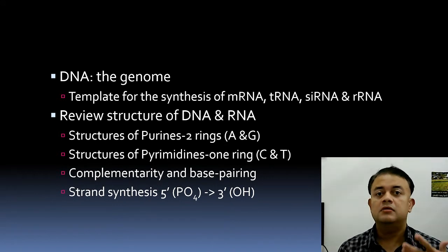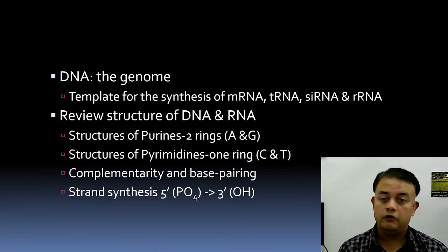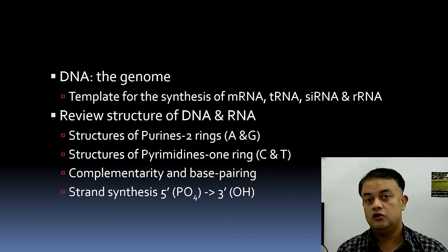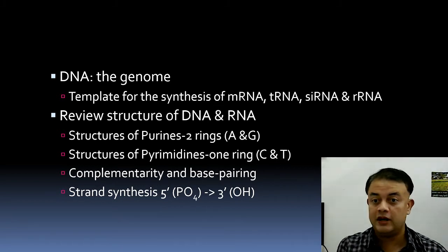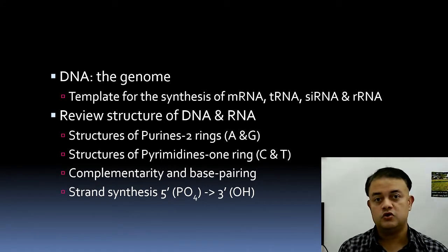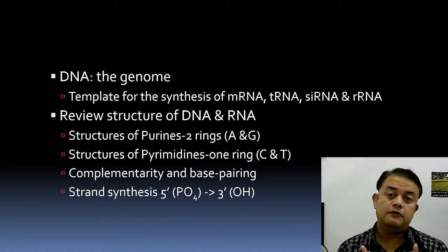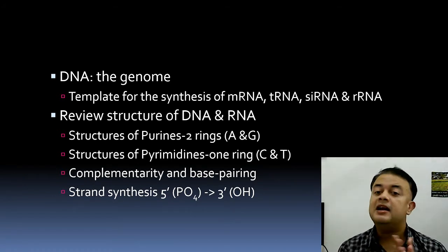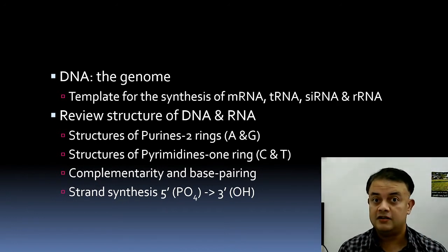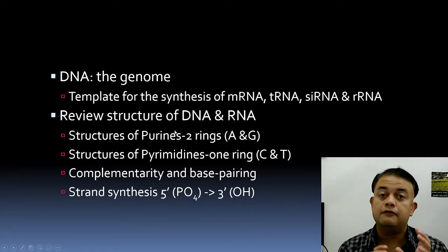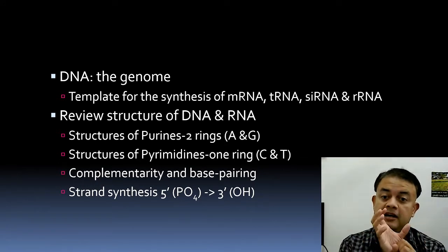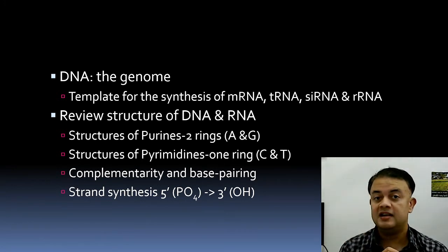Before getting into molecular evolution, a quick overview of DNA: DNA is the predominant genome in most eukaryotes, though a few prokaryotes use RNA. DNA is a template for synthesis of mRNA, tRNA, small interfering RNA, and rRNA (ribosomal RNA). Looking at the structure, DNA has two kinds of nucleotides based on their bases: purines and pyrimidines.